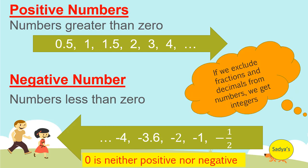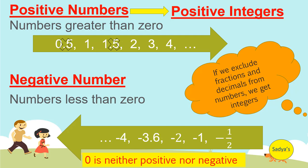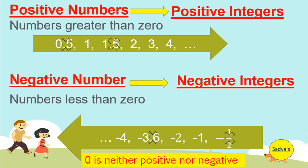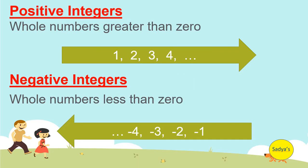If we exclude fractions and decimals from numbers, we get integers. So here, removing 0.5 and 1.5 turns positive numbers into positive integers. Similarly, removing negative 3.6 and negative 1 by 2 from negative numbers gives us negative integers. In short, positive integers are whole numbers greater than zero and negative integers are whole numbers less than zero.